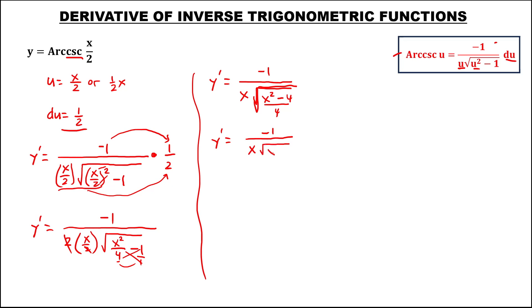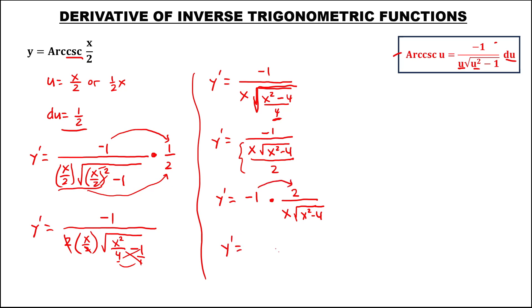We have y prime equals — we can cancel 2 — so this is x, times the square root. Applying the method: x squared minus 4 over 4. To simplify: y prime equals negative 1 over x times the square root of x squared minus 4, and the square root of 4 is 2, so this is over 2. Therefore y prime equals negative 2 over x times the square root of x squared minus 4.